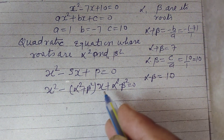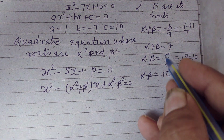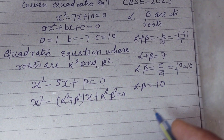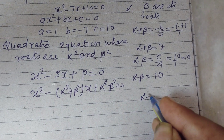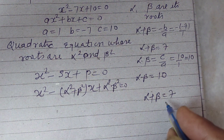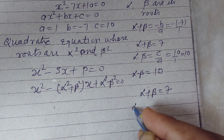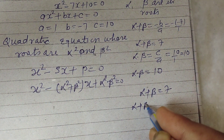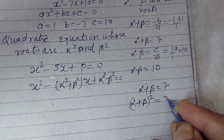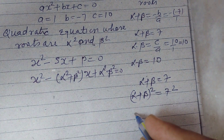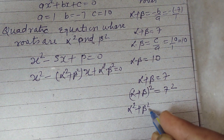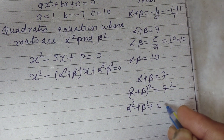We need to find the value of alpha squared plus beta squared. We know alpha plus beta equals 7. Squaring both sides: alpha plus beta whole squared equals 7 squared, so alpha squared plus beta squared plus 2 times alpha times beta equals 49.